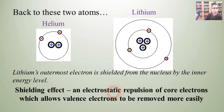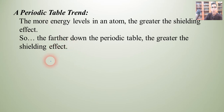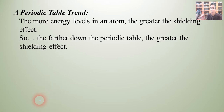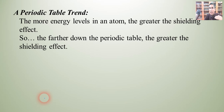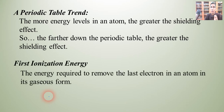Now let's take a look at this periodic table trend that we learned in first-year chemistry. The more energy levels an atom has, the greater the shielding effect. As we proceed down the periodic table, we have more energy levels. So we can say that the farther down the periodic table you go, the greater the shielding effect. This has a direct effect on something we call first ionization energy.